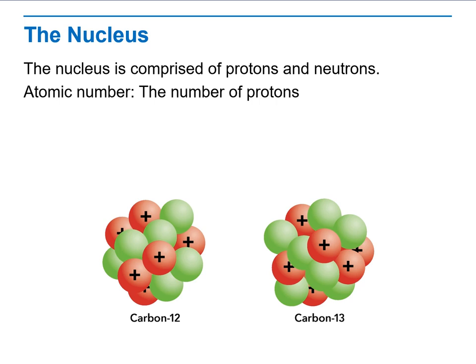Atomic number is the number of protons in the atom, which also determines what the element is. Mass number, what is the mass number? It's the total number of nucleons, i.e. the number of protons added to the number of neutrons.